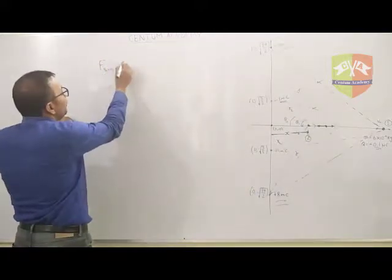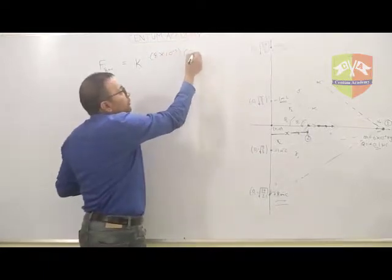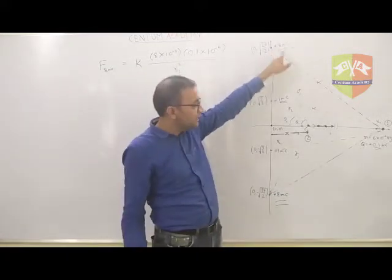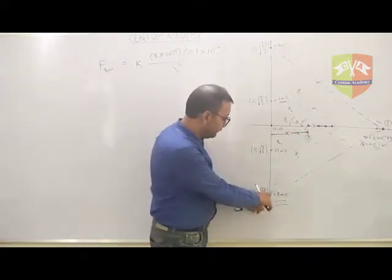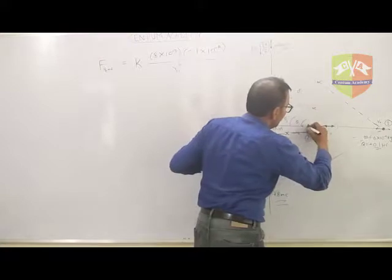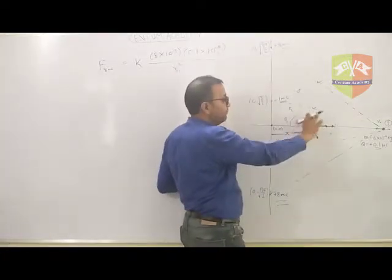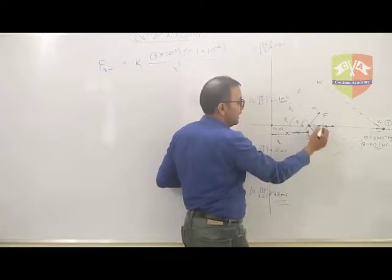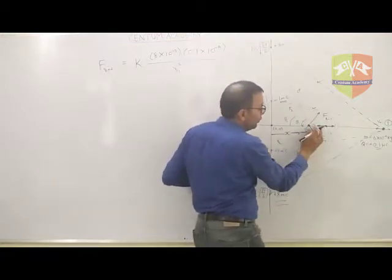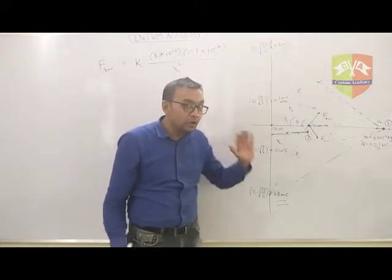The force of repulsion between the 8 milliCoulomb charge and the 0.1 microCoulomb charge is K times 8×10⁻³ times 0.1×10⁻⁶ divided by R1 squared. There will also be another force of repulsion from the second 8 milliCoulomb charge placed symmetrically across the y-axis — one pushing this way, the other pushing that way on the 0.1 microCoulomb charge. The y-axis components of these two forces cancel out, leaving only the x-axis component, which equals F₈mc times cos θ₁.